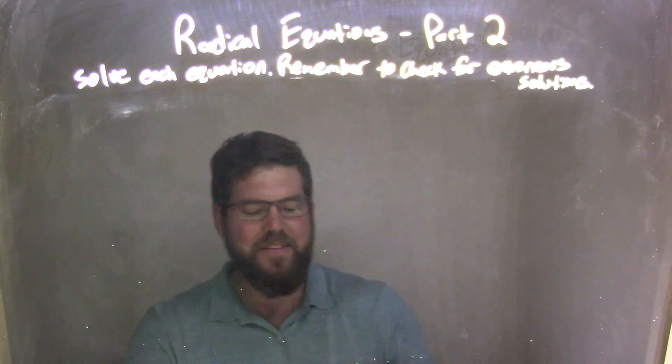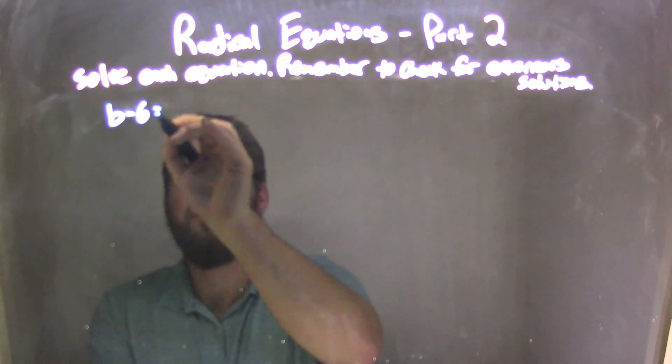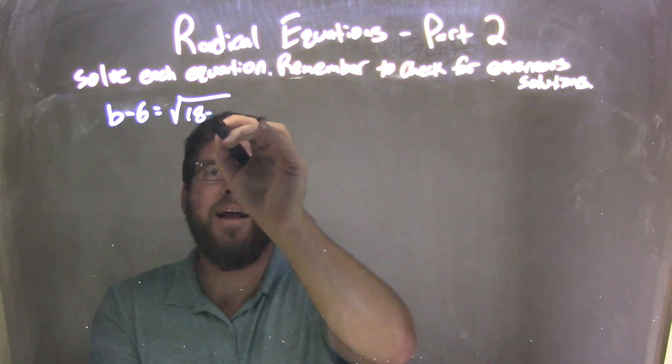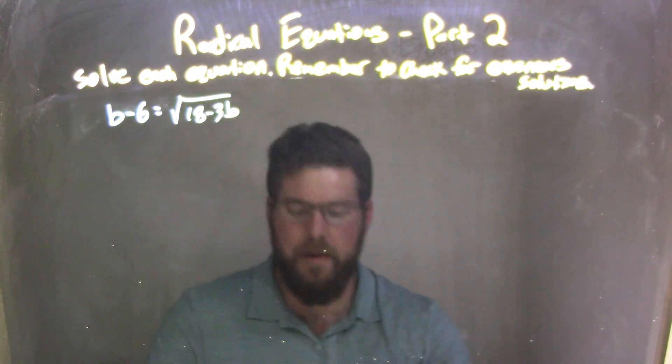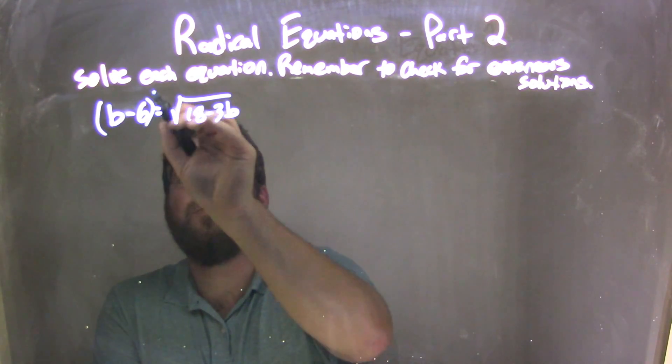So if I was given this equation here, b minus 6 equals the square root of 18 minus 3b, okay? First thing I need to do is square both sides to eliminate that square root, so square both sides here.